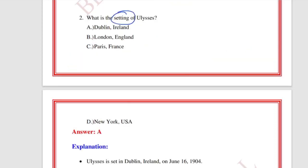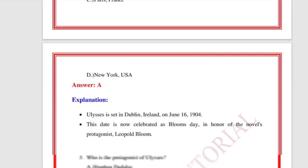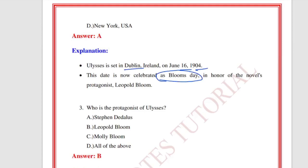What is the setting of Ulysses? Some questions are asked from settings. The answer is Dublin, Ireland. Ulysses is set in Dublin, Ireland on June 16, 1904. This date is now celebrated as Bloom's Day.